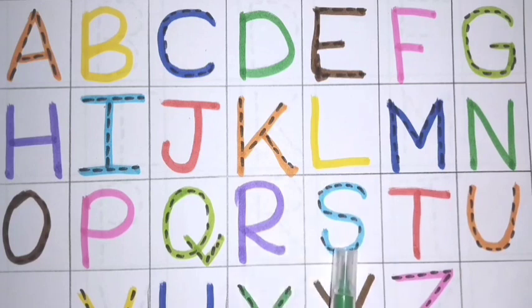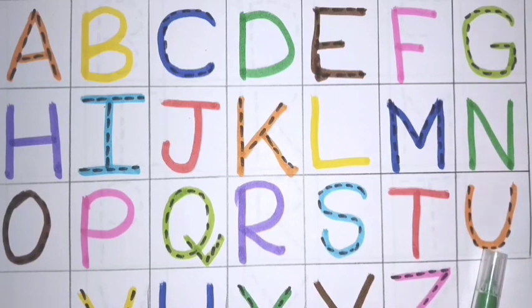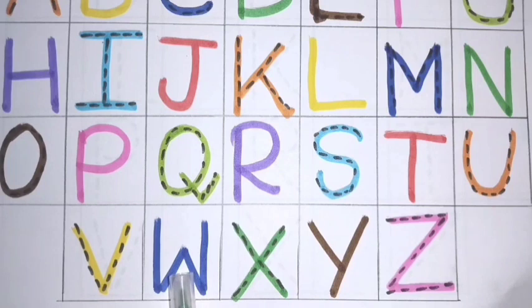S S for sunlight, T T for tie, U U for uniform, V V for van, W W for watch.